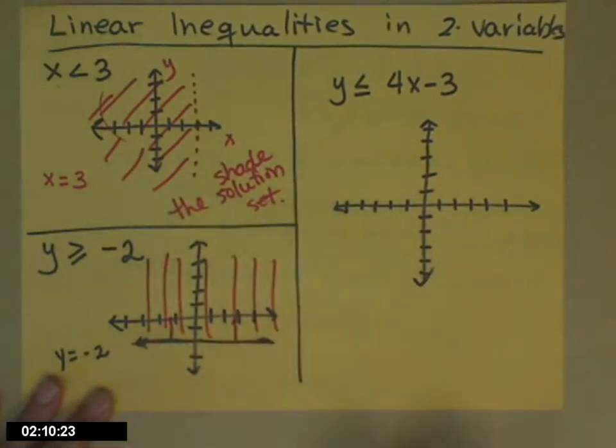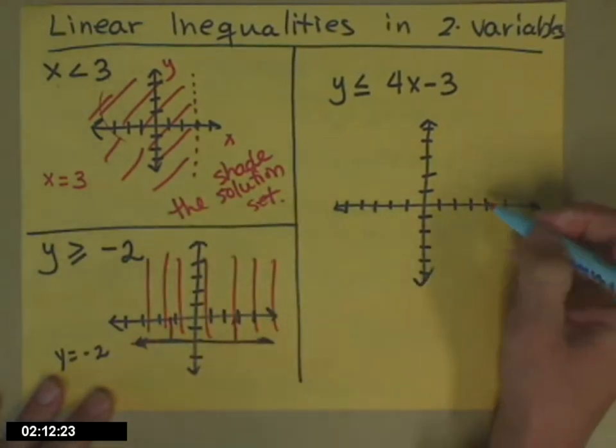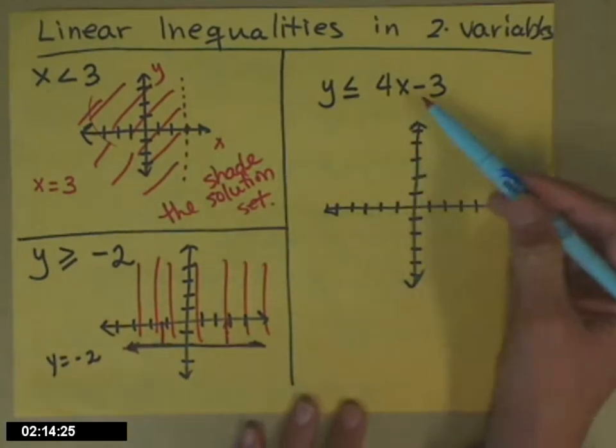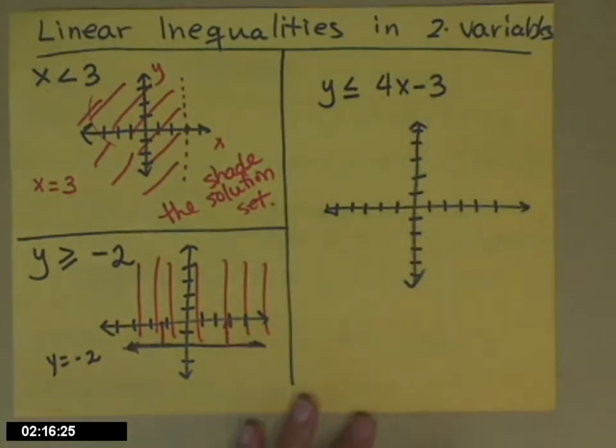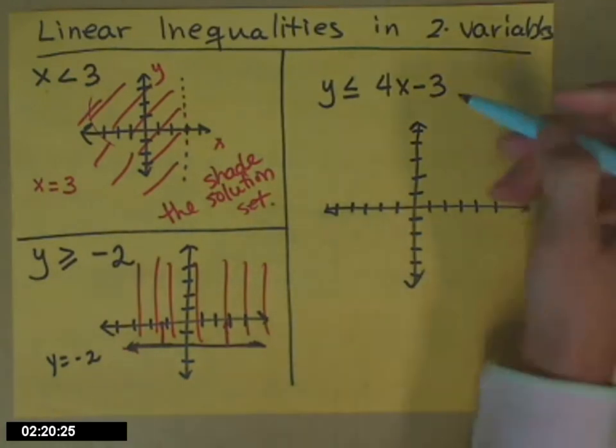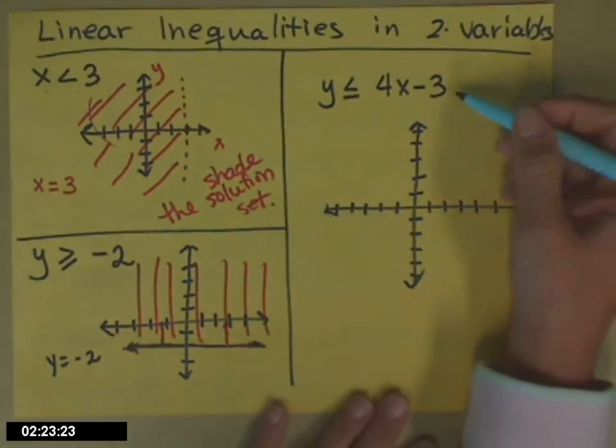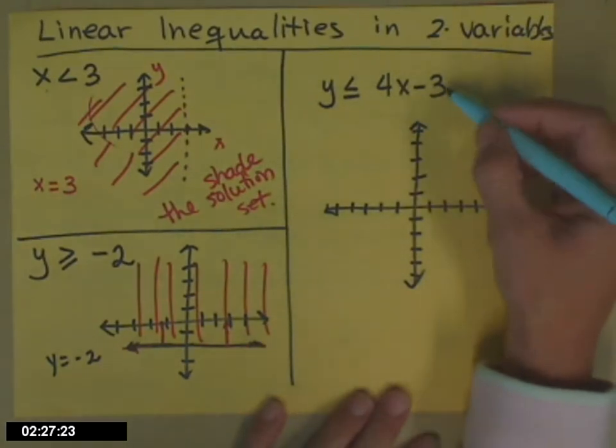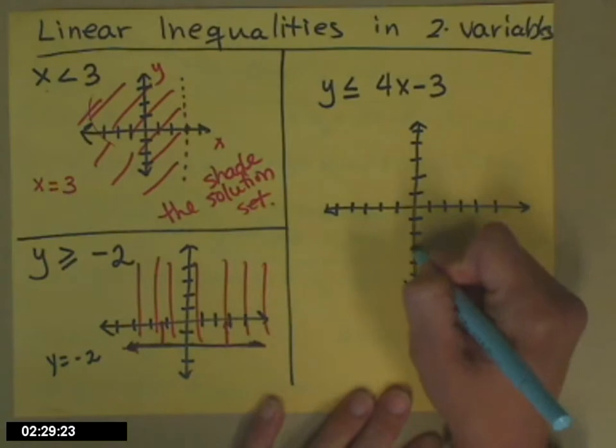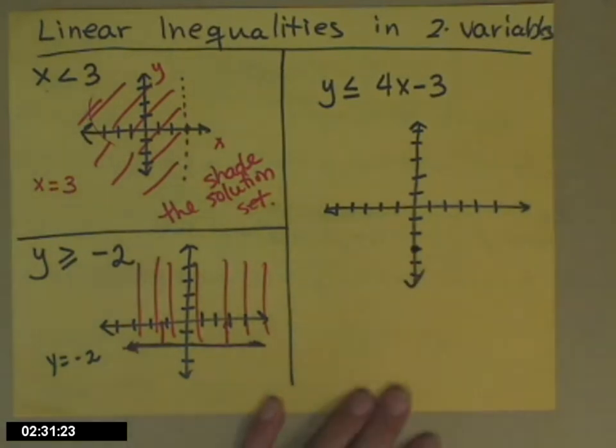My last example actually has x's and y's. And this is why we reviewed graphing equations of lines before, because I have to get this line sketched so that I know where to shade. It's set up in slope-intercept form, so I graph those by starting at my y-intercept of negative 3. And then I'm going to count off a slope.